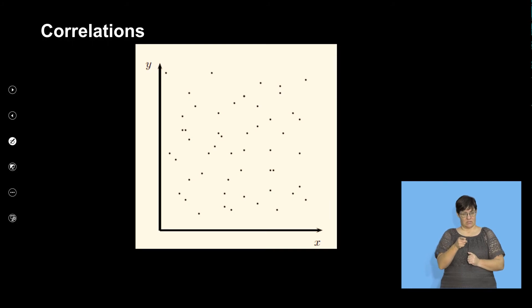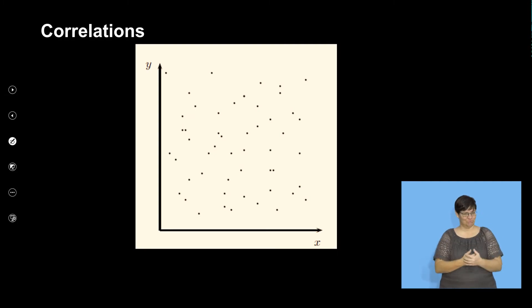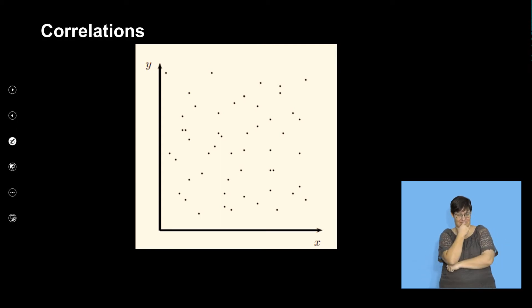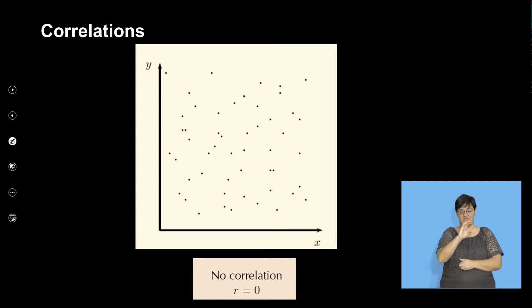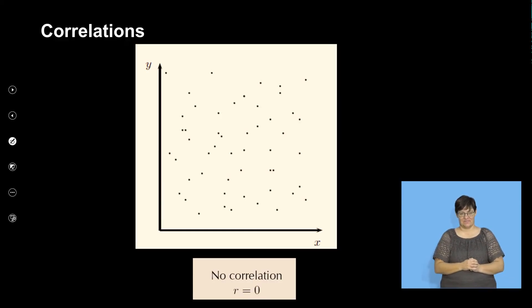What about this one now? Can I fit a line going up, down? Is there a correlation? I don't think there's a negative or positive correlation. I don't think there's correlation at all. Here we have no correlation at all, so the correlation coefficient will be 0. There's no correlation between x and y in this case.